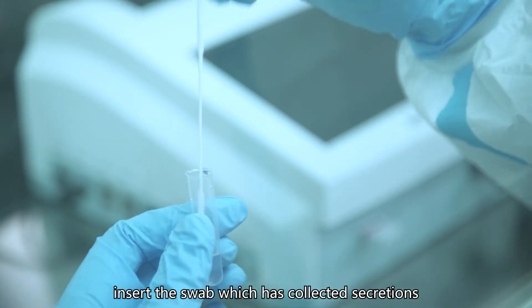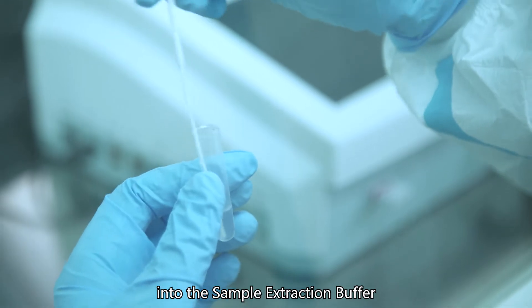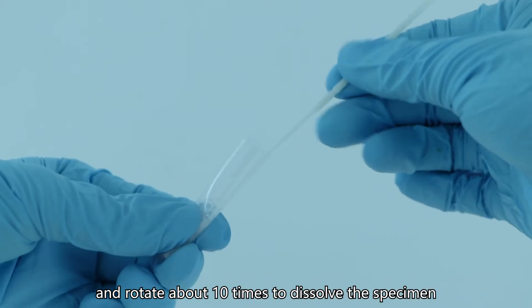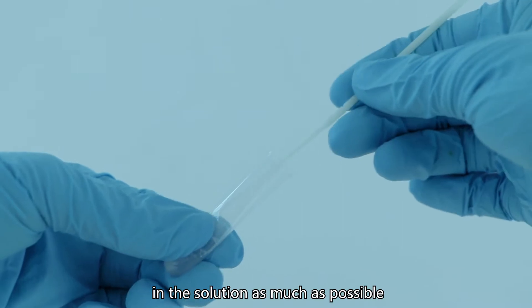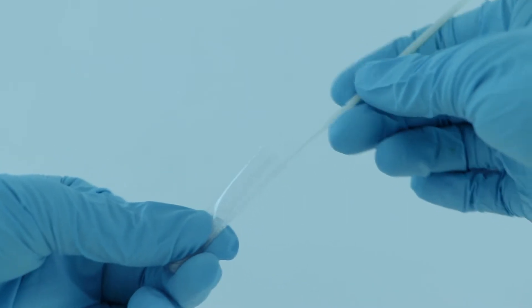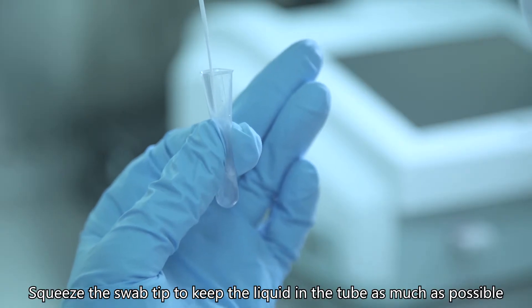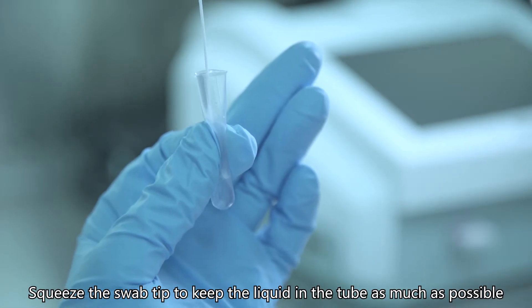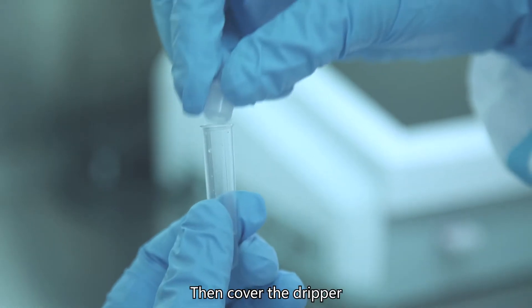Insert the swab which has collected secretions into the sample extraction buffer, and rotate about 10 times to dissolve the specimen in the solution as much as possible. Squeeze the swab tip to keep the liquid in the tube as much as possible, then cover the dripper.